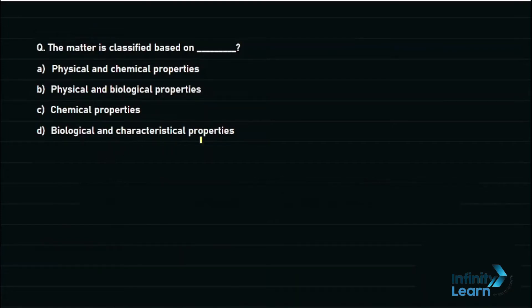Your question is: the matter is classified based on dash. The first option is physical and chemical properties. Second is physical and biological properties. Third option is chemical properties, and the last option is biological and characteristical properties.